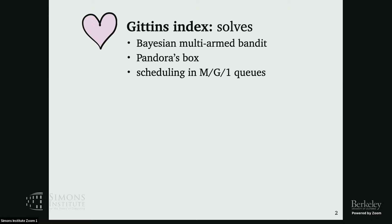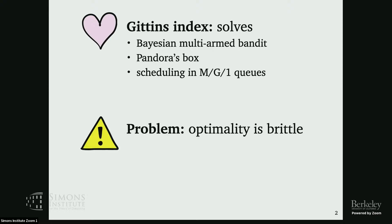The common thing about the Gittins index in all these settings is that there are optimality proofs, but these proofs are brittle. If you slightly perturb the assumptions, all of a sudden you don't have optimality anymore — it becomes much less clear what we should do. For example, all of these optimality proofs rely on having a single server: pulling one arm at a time, opening one box at a time, serving one job at a time. What should we do if we have multiple servers?